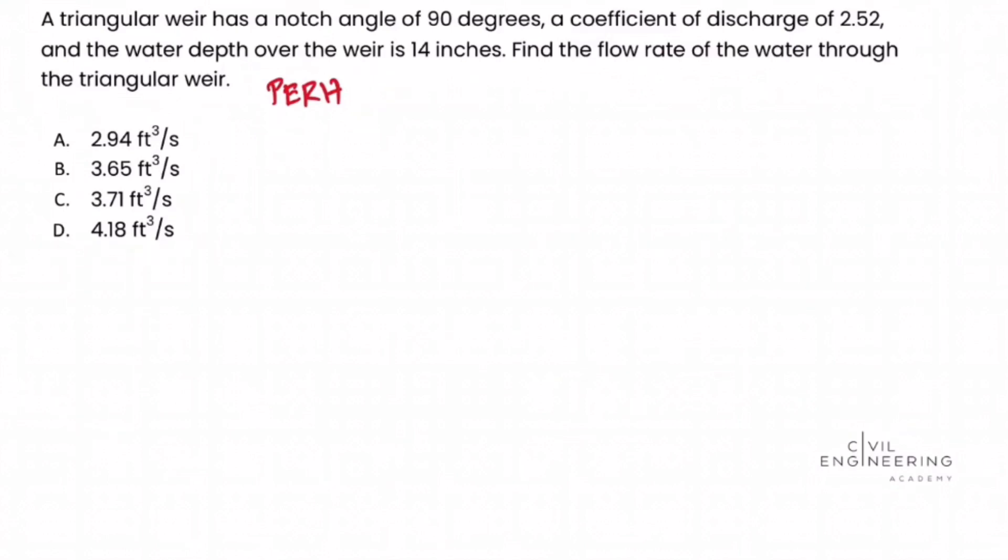and we're going to look specifically at section 6.2.5.5 which deals with triangular or V-notch weirs. It can be called either triangular or V-notch.